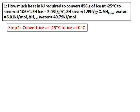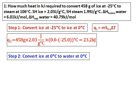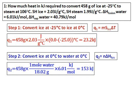Step 1: converting ice at negative 25 degrees Celsius to ice at 0 degrees Celsius. The heat Q1 = ms∆T, using the specific heat of ice; temperature changes from negative 25 to 0. Calculate Q1, converting to kilojoules. Step 2: converting ice at 0 degrees Celsius to water at 0 degrees Celsius — a phase change. The equation is Q2 = number of moles times delta H fusion. Number of moles is calculated from the mass of ice divided by the molar mass of water. Q2 is already in kilojoules.